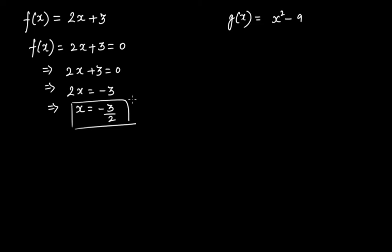That's why we say this is a zero of this polynomial, or root of this polynomial equation. We use the term 'zero' for the polynomial and 'root' for the polynomial equation — both refer to the same thing with just a little difference. So -3/2 is a zero of this polynomial and also the root of this polynomial equation.